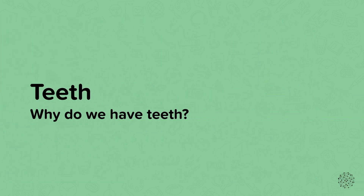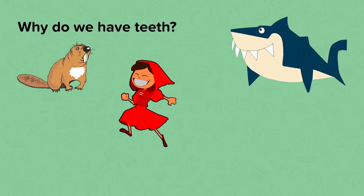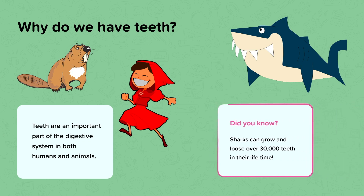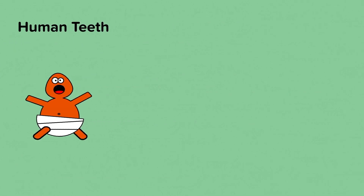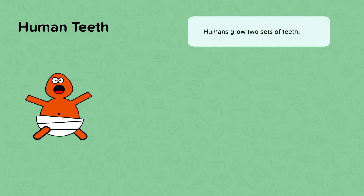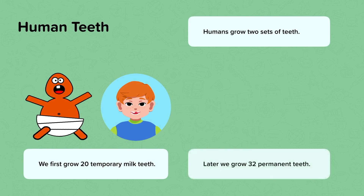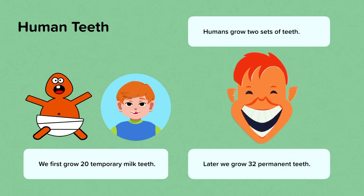So why do we have teeth? Do you know why animals have teeth and have you seen any differences between them? Teeth are an important part of our digestive system, helping in the breakdown of food. They're needed by animals including humans. Did you know that sharks can grow and lose over 30,000 teeth in their lifetime? That's a bit different to human teeth. Humans only grow two sets of teeth — first temporary milk teeth when they are younger, and later we grow 32 permanent adult teeth.